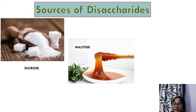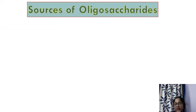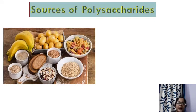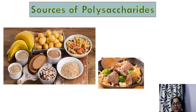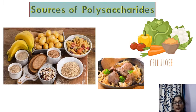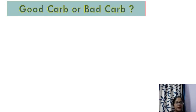Lactose is obtained from milk and milk products. Sources of oligosaccharides are mainly pulses and some green vegetables. For polysaccharides, vegetables and green leafy vegetables are great sources of cellulose, and potatoes, grains, pastas, and bananas are good sources of starch. Liver and muscles are the storage sites of glycogen and are thus good sources of glycogen.